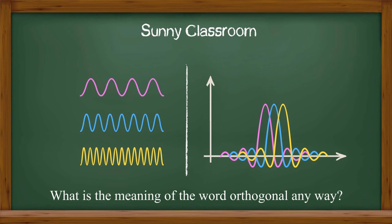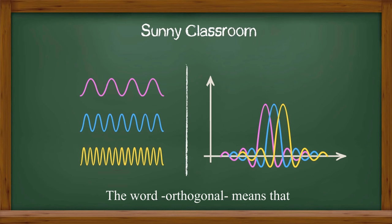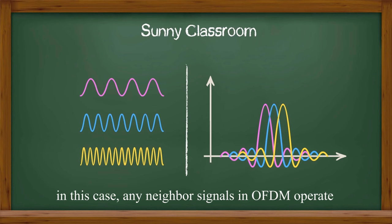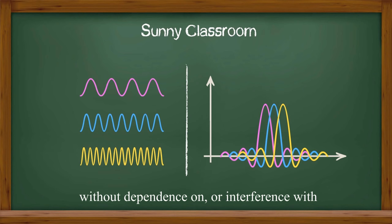What's the meaning of the word orthogonal anyway? The word orthogonal means the two or multiple objects act independently. In this case, any neighbor signals in OFDM operate without dependence on or interference with one another. Let me explain why.